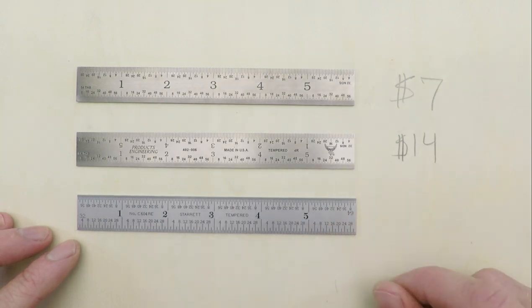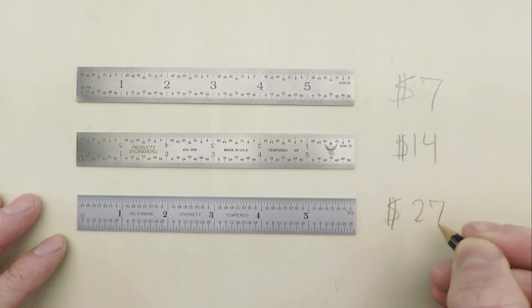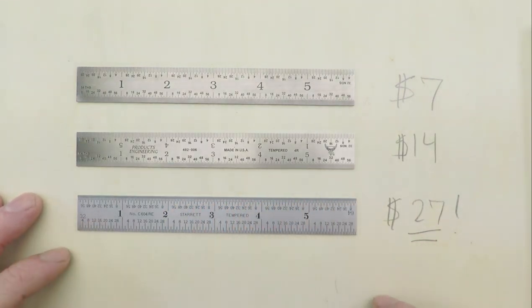This little ruler is one of the least expensive Starrett tools you can buy at $27. It's made of premium-grade, spring-tempered carbon steel, not stainless, and has been given a special finish called satin chrome, which is kind of a Starrett Hallmark.